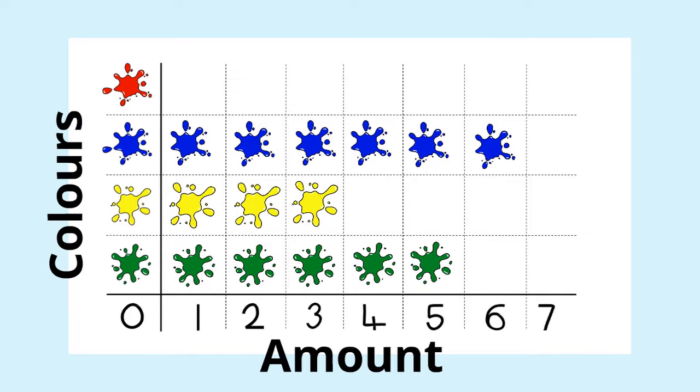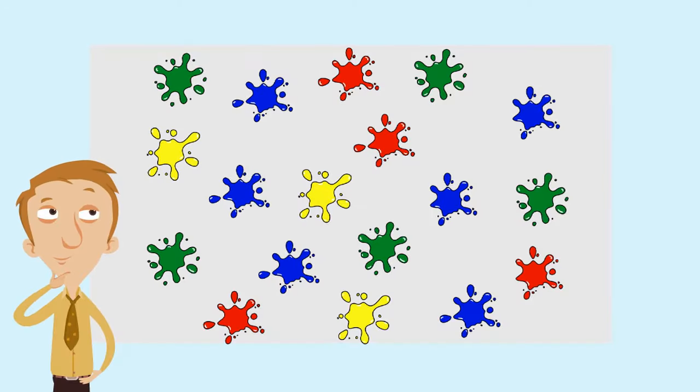And we'll finish off with the red splats. Let's count them up. There's one, two, three, four red splats. We draw them in like this.